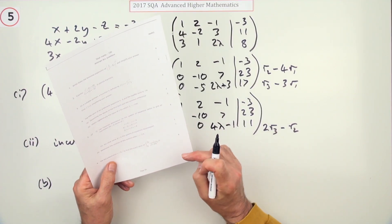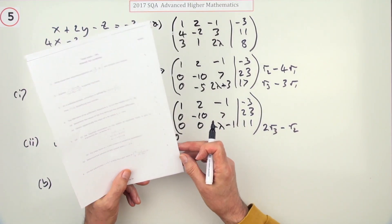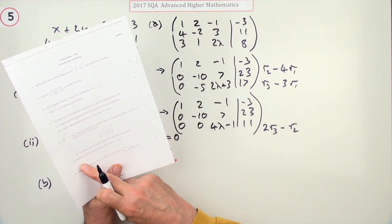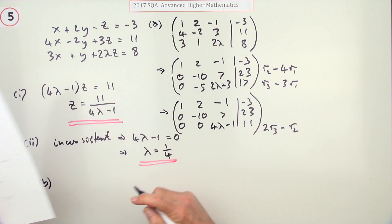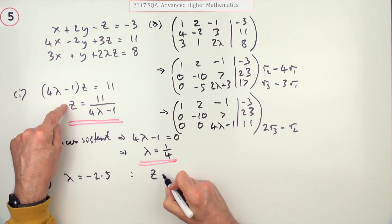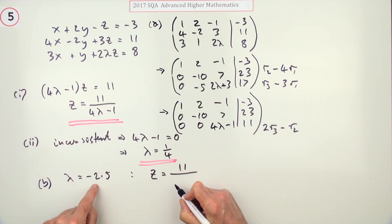Part B. It's only worth one mark this. Determine the solution of the system when lambda is negative 2.5. That's really quite miserable. So just pop it back in. I already know what z is. Z is going to be 11 over 4 times negative 2.5. Well that's negative 10 minus 1. So that's quite handy. Z is going to be negative 1.